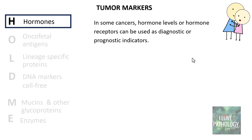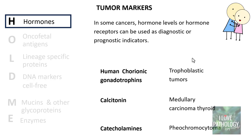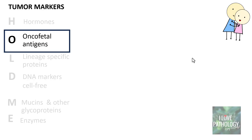Hormones: various tissues in our body produce hormones, but in some cancers the hormone levels can be significantly high and can be used as diagnostic or prognostic indicators. The important hormones used as tumor markers are human chorionic gonadotropins, which are elevated in trophoblastic tumors; calcitonin, which is elevated in medullary carcinoma of the thyroid; and catecholamines, which are elevated in pheochromocytoma, an adrenal medullary tumor.